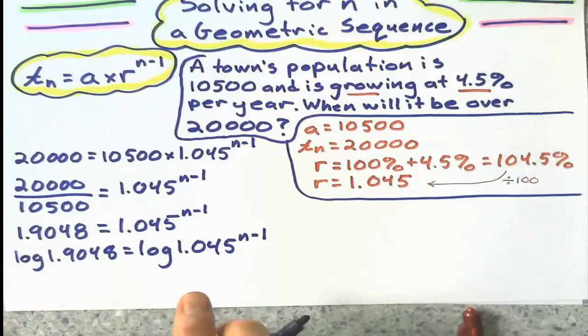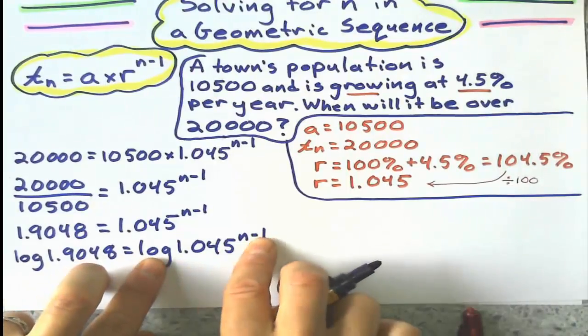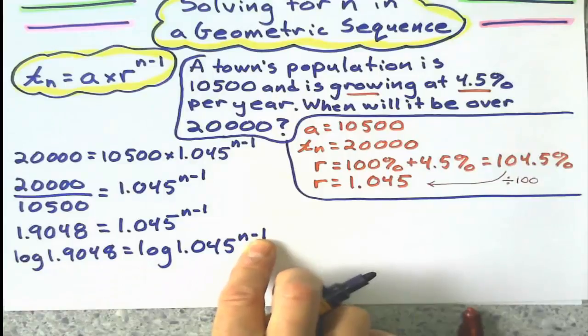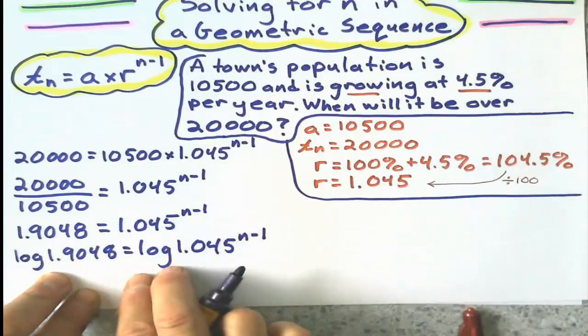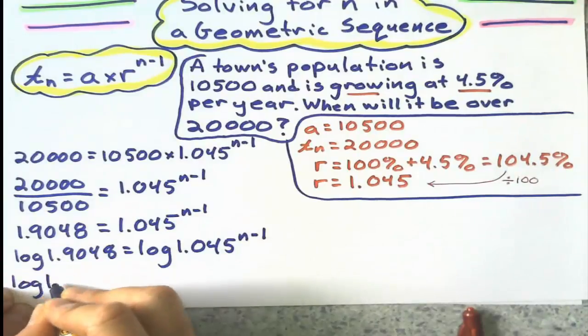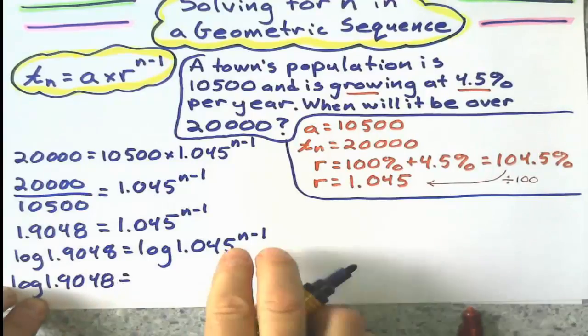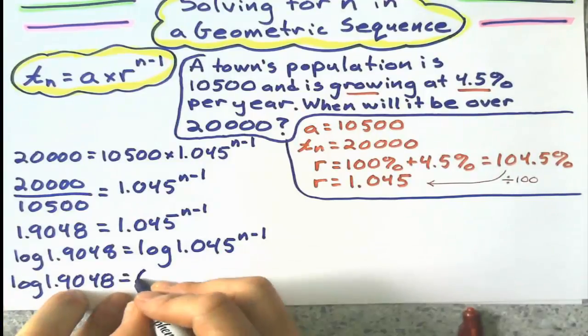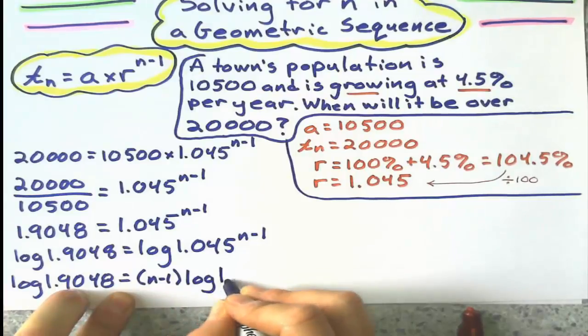Now, with logarithms, I've got the log of this number raised to this power. When I have that, how do I simplify that? Is I take this exponent and I multiply it to the log. So it looks like this. I'm going to put that n minus 1 in brackets. (n minus 1) times log 1.045.